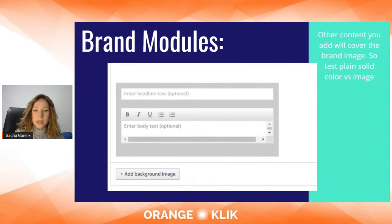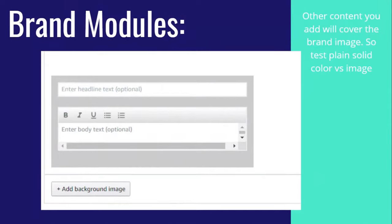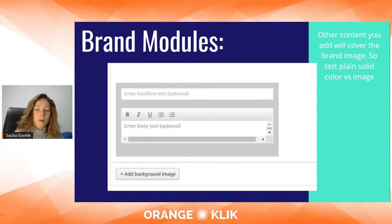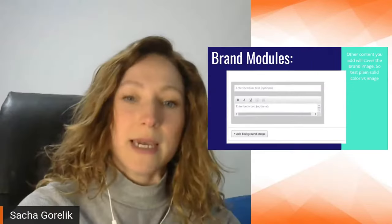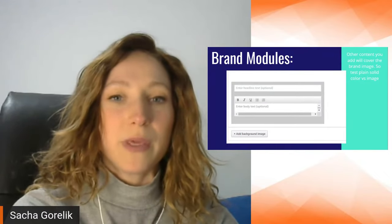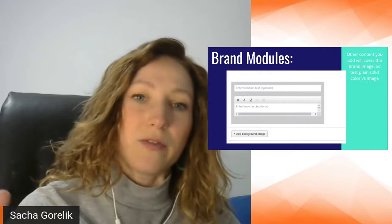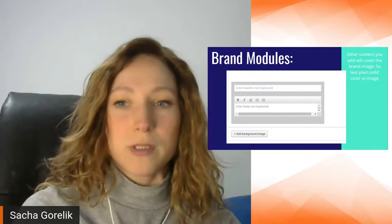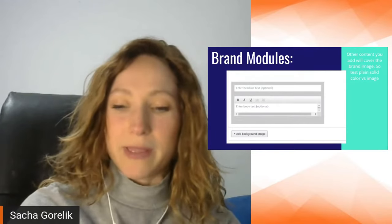The brand carousel background is essentially a background image that represents your brand. You add a headline text — which could be the name of your store, a short slogan, or a tagline — and some body text as well. Any content you add on top of this brand image background will cover the image itself, so keep that in mind. It might be good to test a plain solid background versus an actual photo or colorful image.